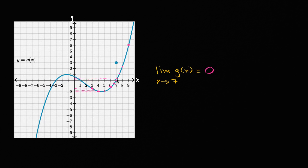g of 7.01 is even closer to zero. g of 7.00001 looks like it'll be even closer to zero. So once again, it looks like we are approaching zero as x approaches seven, in this case, as we approach from larger values of seven.